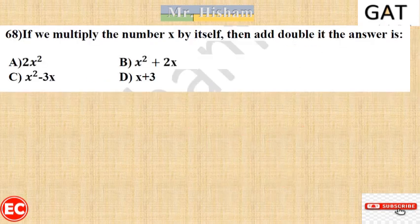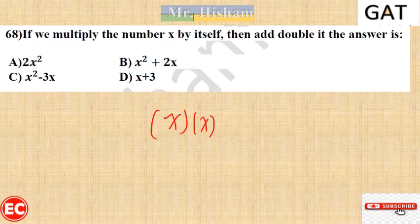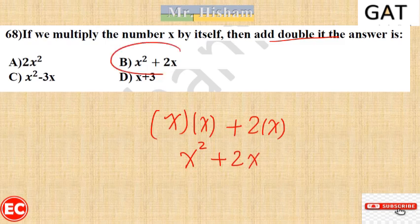Question 68: If we multiply the number x by itself and then add double of it, what is the expression? x multiplied by x is x squared, and double x is 2x. So the expression is x squared plus 2x.